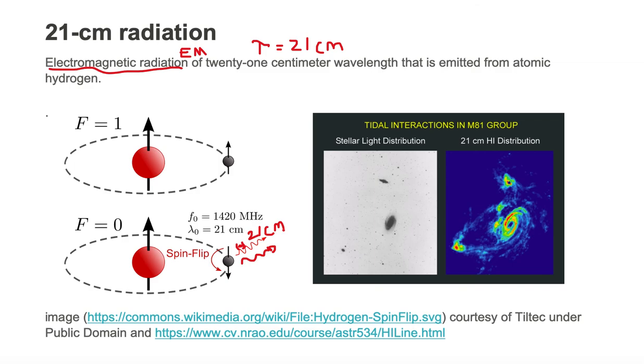So 21 centimeter radiation we know comes from atomic hydrogen. So whenever you have a distribution map in 21 centimeter neutral hydrogen, we see neutral hydrogen gases where they are in space.